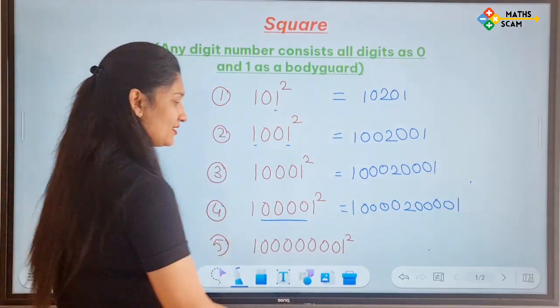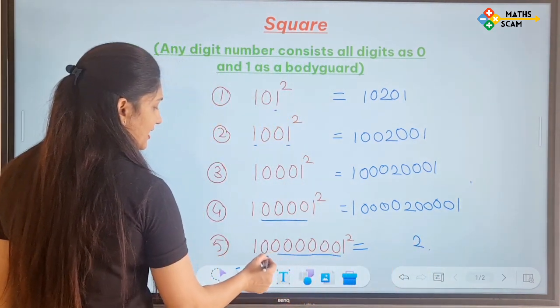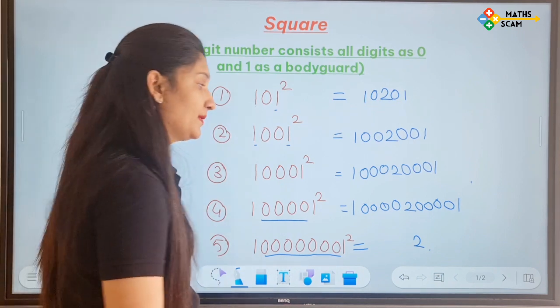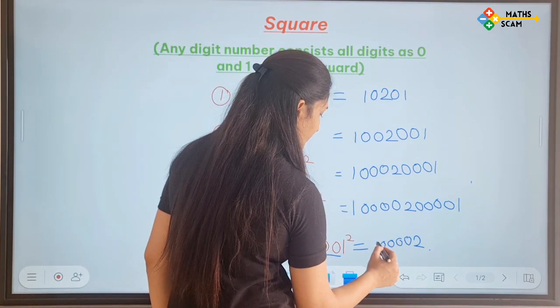And last answer is very easy question. 2 write down in middle. How many 0's? 7 0's. So 7 0's before and after. 3 4 5 6.